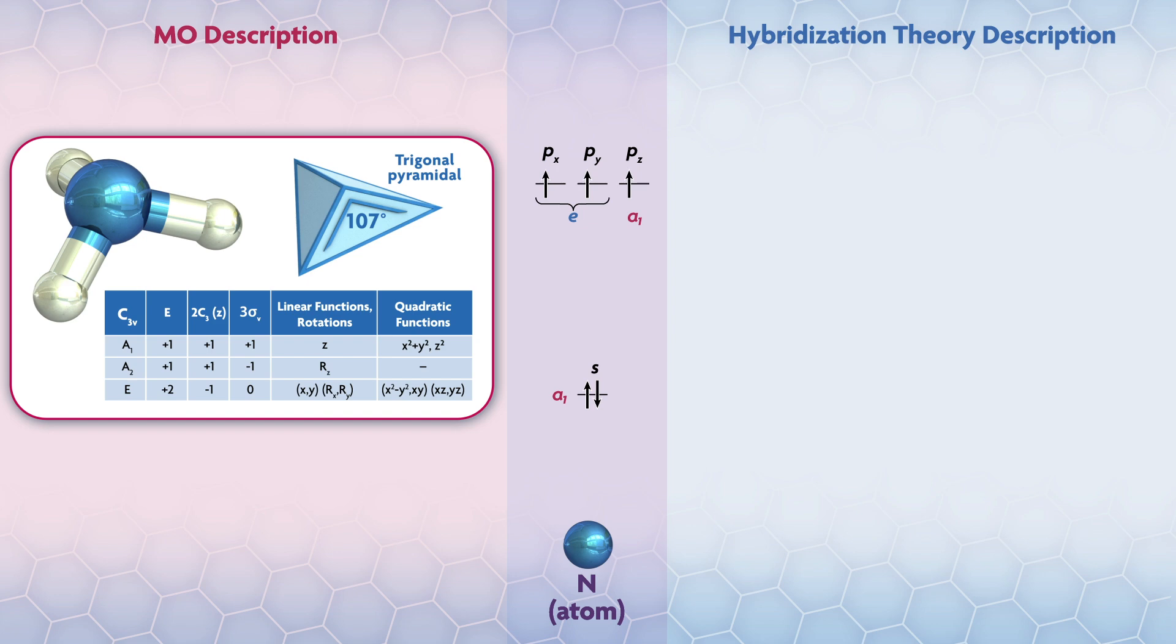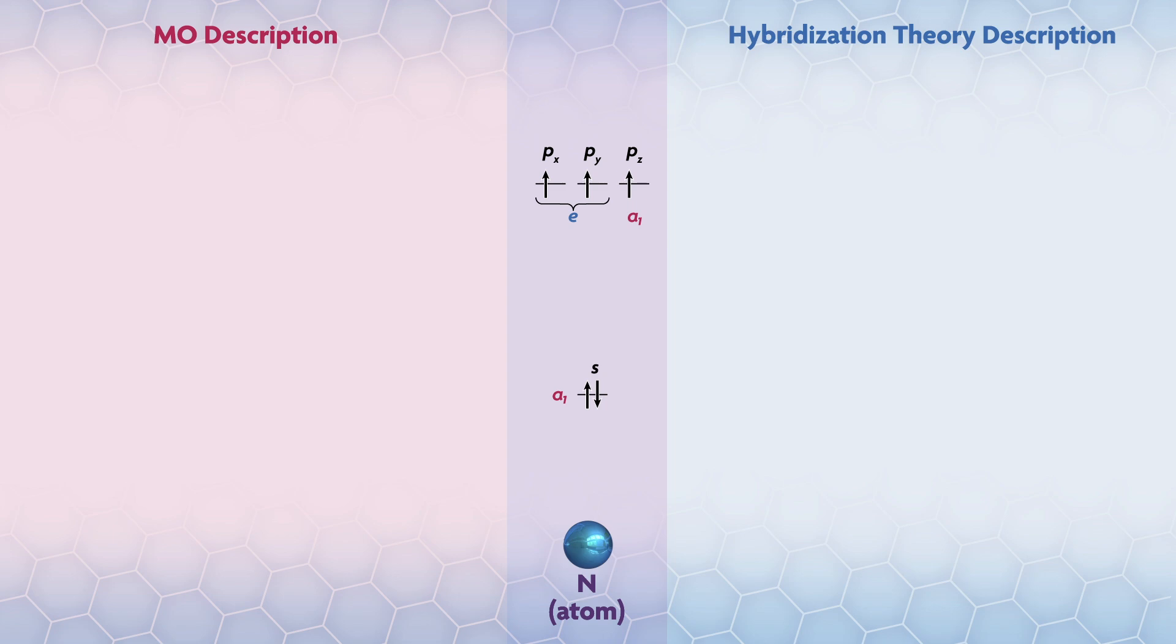The starting point for any MO analysis is the geometry of the molecule, and ammonia has a trigonal pyramidal structure with H-N-H angles of about 107 degrees. Consequently, the compound is in the C3v point group. Nitrogen has four valence orbitals: an s, px, py, and pz. For MO theory, it is critical to have the irreducible representations for these orbitals, which are A1 for s and pz, and E for px and py.